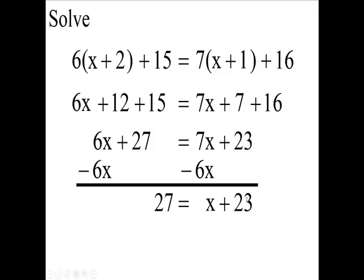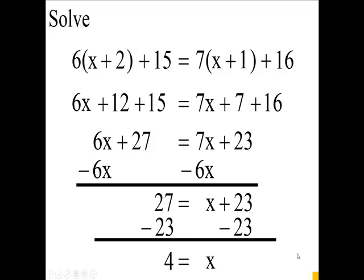Now subtract 23 from both sides of the equation. You're going to get 4 equals x. So x is 4.